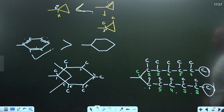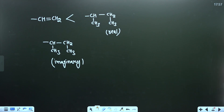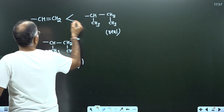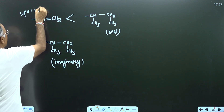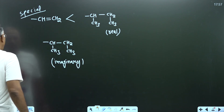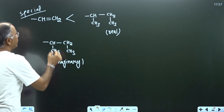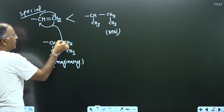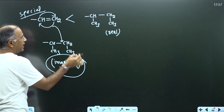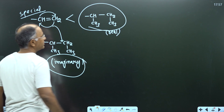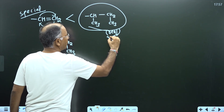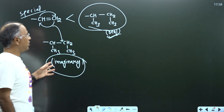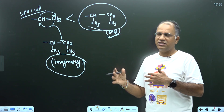This is a special case. For example, if you have to give priority to a pi bond and a cyclic compound: break the pi bond, and after breaking you get an imaginary structure and a real one. Which will be given priority? Priority must be given to the real structure. Real is given preference over imaginary. This is applicable when exactly the same valency is forming.